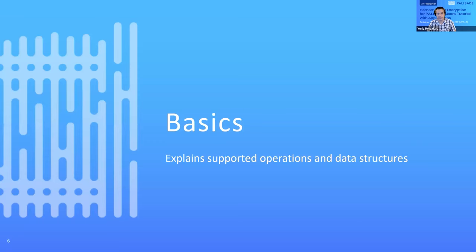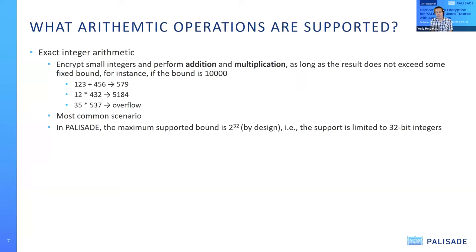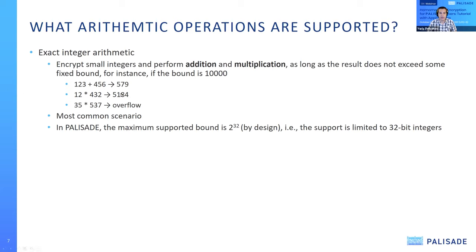The first fundamental question is: what type of computations should we use integer arithmetic for in homomorphic encryption? The first and most common use case is to provide support for exact integer arithmetic, typically for relatively small integers. In Palisade, 'relatively small' means restricted to basically 32-bit integers — that's the bound used for any computations. We support two basic operations: addition and multiplication.